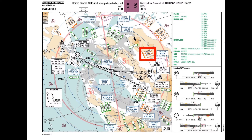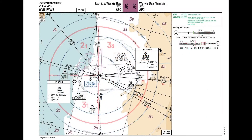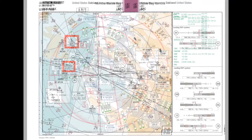Where no SIDs and STARs are published, AFCs may show airway and ATS route information instead, to serve the airport as an area chart. In this example, the AFC of Walvis Bay, Namibia, shows airways and ATS route information.